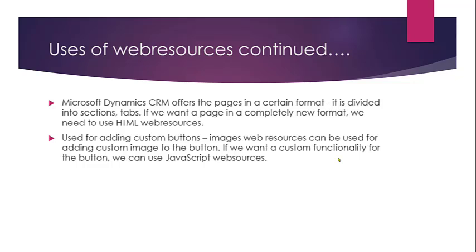Similarly, we can use web resources to format pages in a certain format. In general, a CRM form is divided into sections and tabs. If we want it to be displayed in a completely new format, we need to write HTML web resources. When adding custom buttons, you can use image web resources. Typically a form has certain default buttons like save, save and close, new, etc. If you want to add your own custom button with its own custom functionality, it would be nice to have an image for that button — otherwise it will not look nice. In those scenarios, you can use an image web resource to add an image to that button.